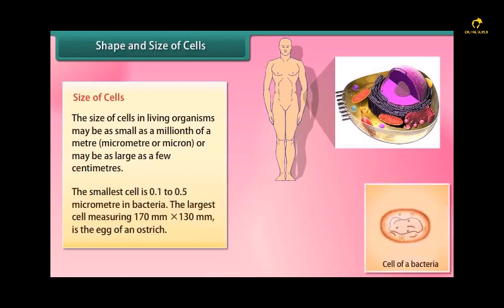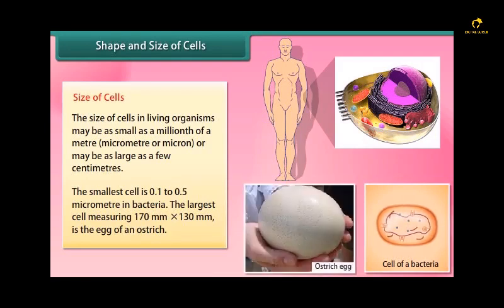The smallest cell is 0.1 to 0.5 micrometer in bacteria. The largest cell measuring 170 mm into 130 mm is the egg of an ostrich.